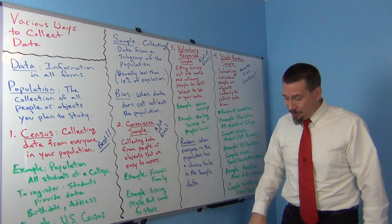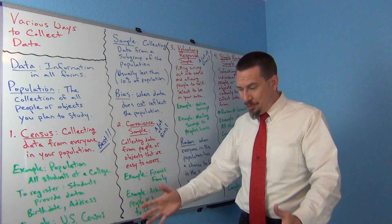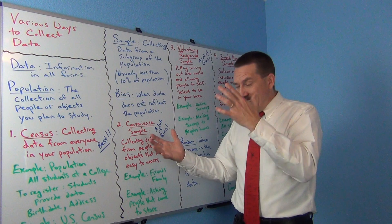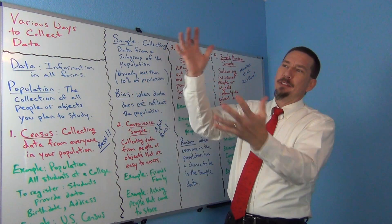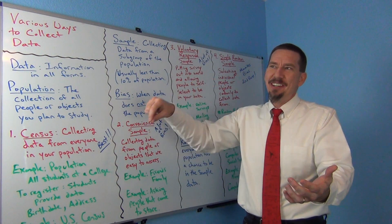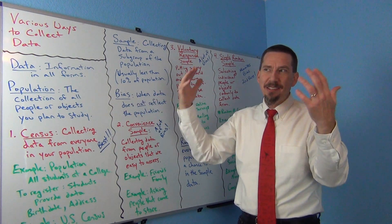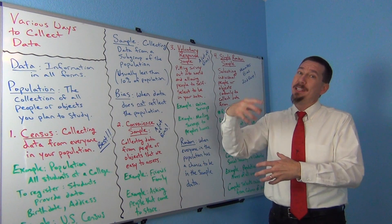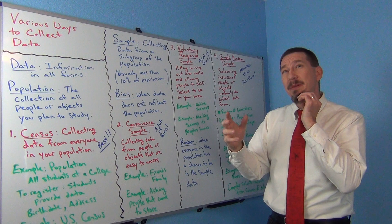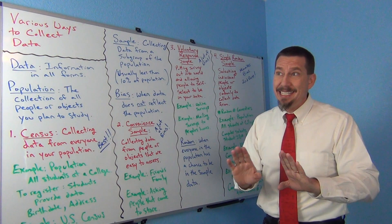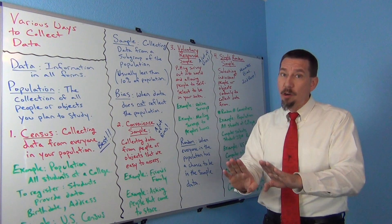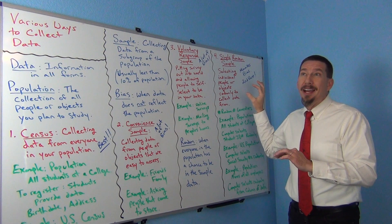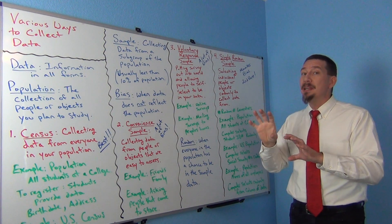In the old days before computers, statisticians would have huge books on their desks — just a book of random numbers. They'd flip the book open, and whatever page it fell on they would start writing those numbers down, and that's who they would pick. Simple random samples are not easy, but the effort is worth it because this gives you a very good way of collecting data that minimizes bias.